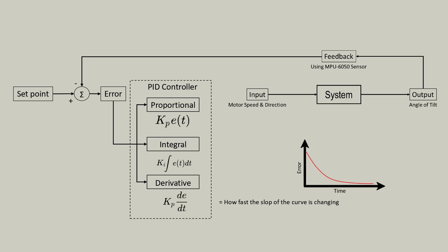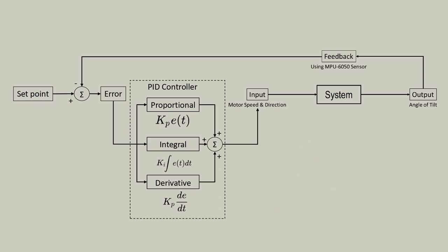It helps in predicting future behavior and responding to changes in the error. These three components—the proportional, integral, and derivative paths—work together to generate the appropriate actuated signal that will gradually bring the robot back to an upright position.